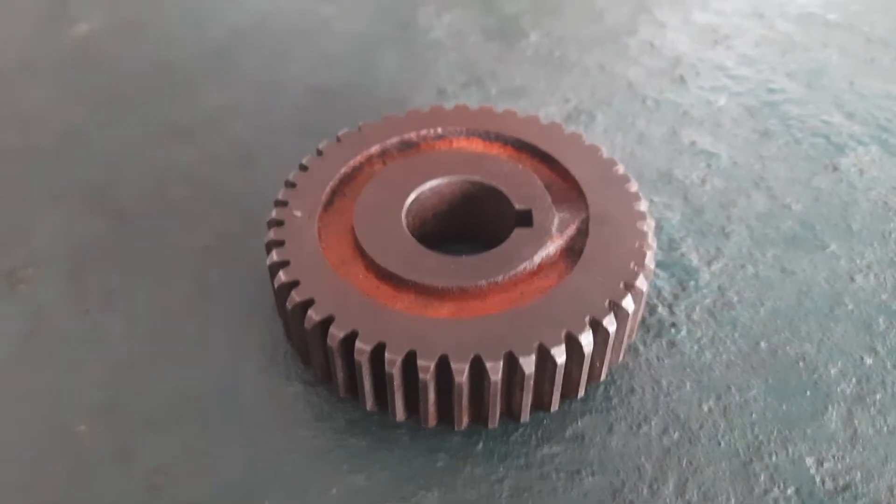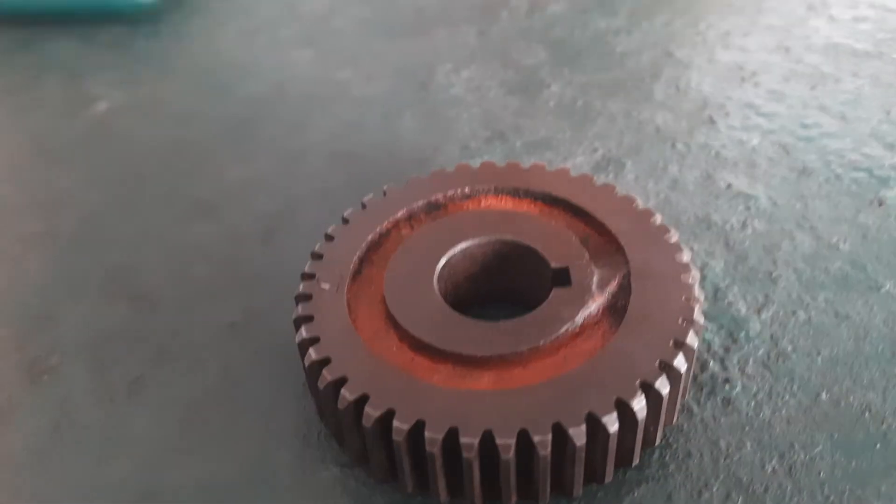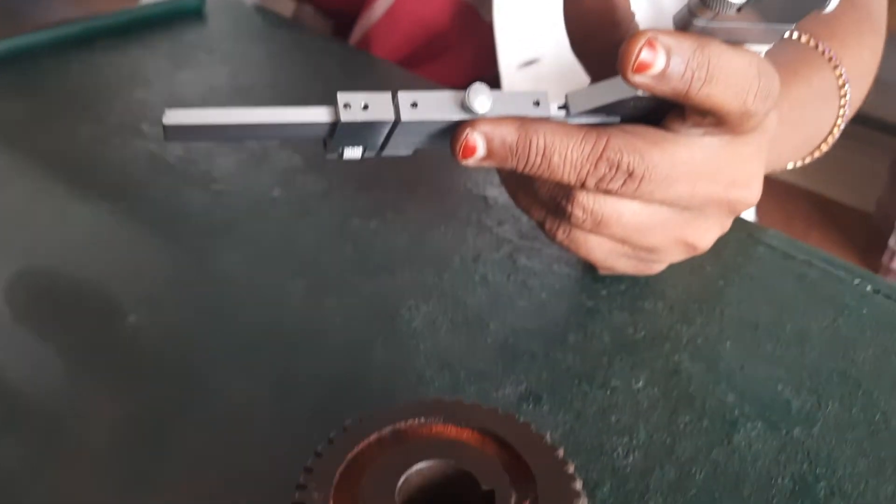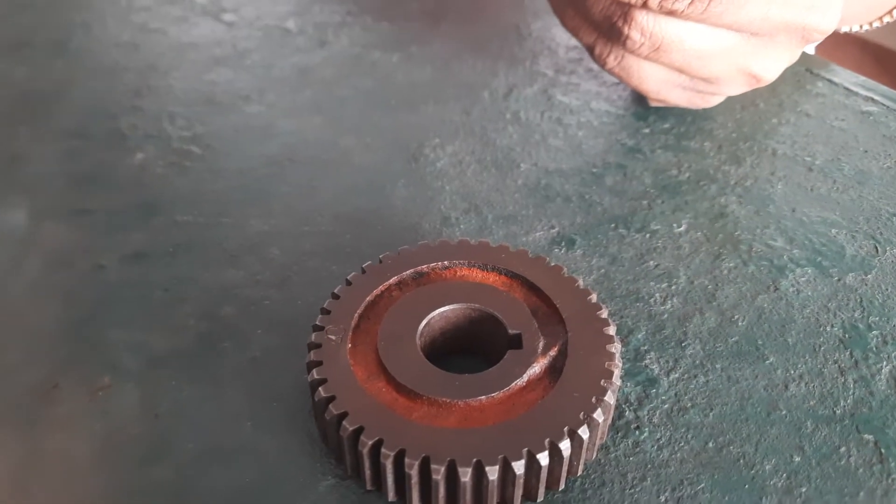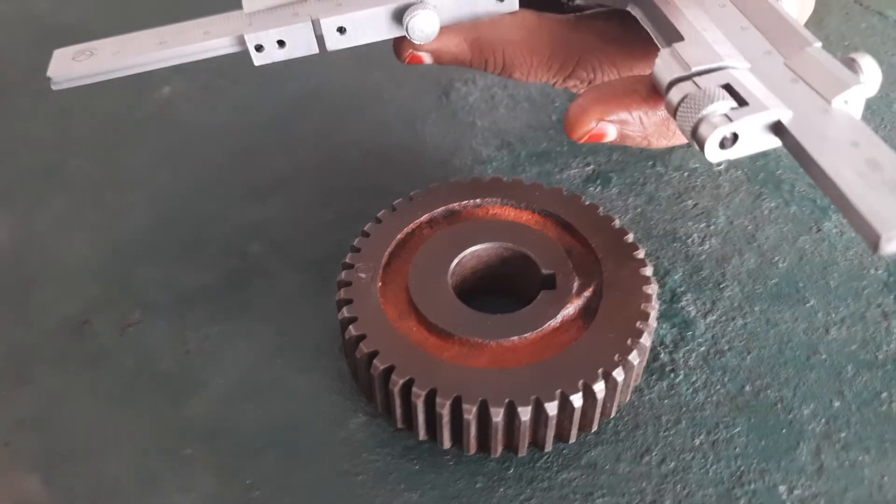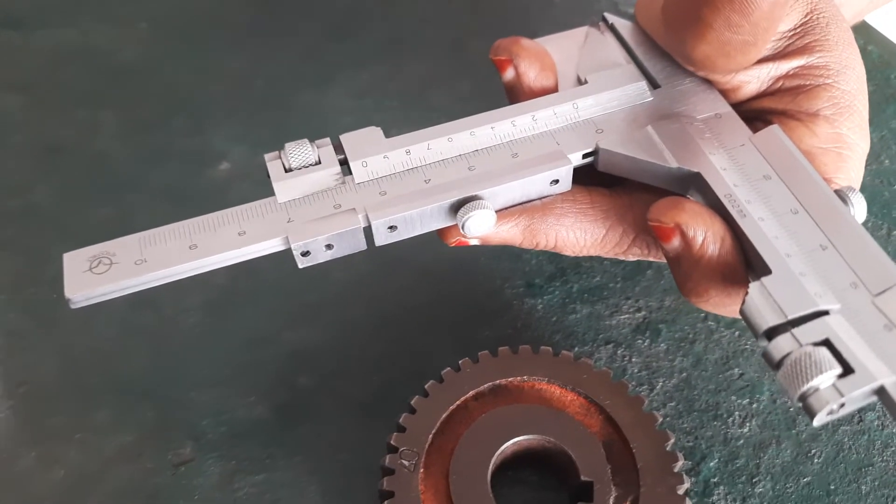The gear tooth vernier caliper is an instrument similar to the ordinary vernier caliper but having a second beam at right angles to the main beam, as shown here.